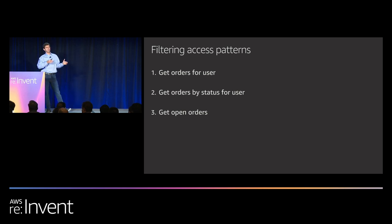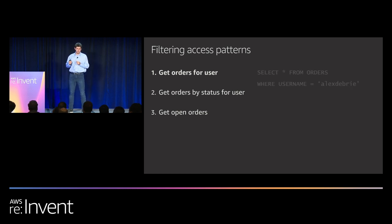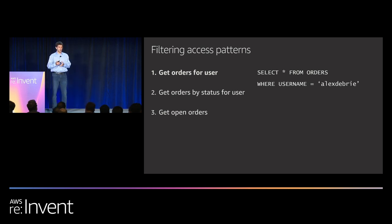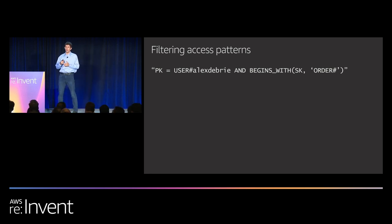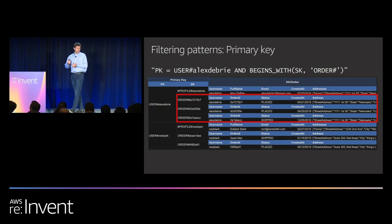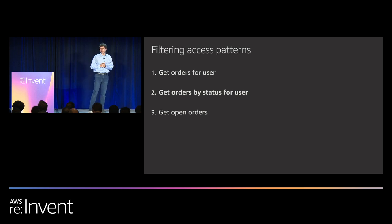The first filtering access pattern: get orders for a user. In SQL this is SELECT * FROM orders WHERE username = 'Alex'. In DynamoDB, we query where PK is USER#alexdebrie and SK begins with ORDER#. We're using that partition key to filter down to just the items we want — go to that user's partition, find the orders, fetch and return them. We're not getting all orders; we're getting orders for a specific user filtered by PK.